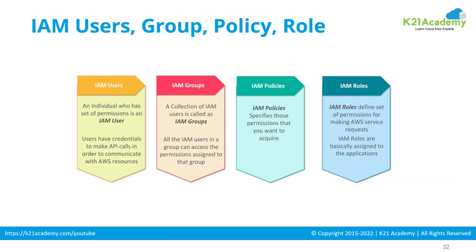Let's begin with an overview of the four main things within AWS IAM: users, groups, policies, and roles. IAM users are individuals like you and me with a set of permissions — people who can log in to the console, through the command line, or do something on the AWS cloud. Users typically have credentials, which could be a password or a key, to either make API calls or access the AWS console.